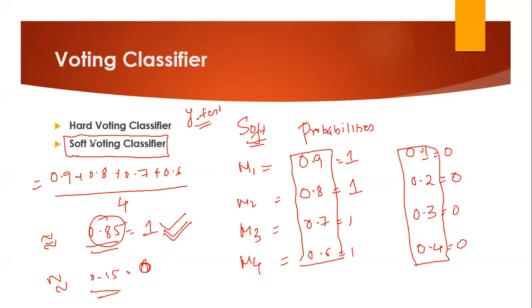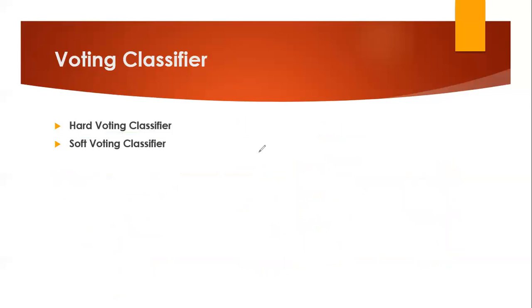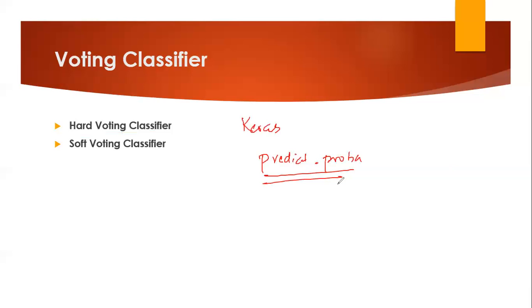I hope you now understand the basic difference between hard voting classifier and soft voting classifier. This classifier is used in both machine learning and deep learning techniques. In most ensemble techniques, hard voting classifier is used. In deep learning, if you know Keras, every model has a function called predict_proba, which is predict probability — and that is where we use soft voting classifiers. This was all about voting classifiers. My next video will be on AdaBoost and I'm also going to implement some projects. Please keep on learning, never give up, and I'll see you all in the next video. Have a great day ahead, God bless you all.